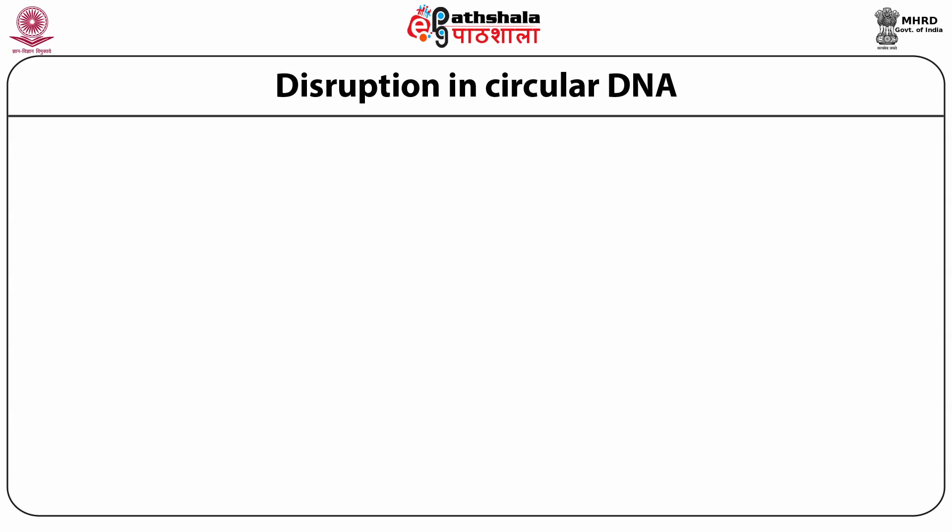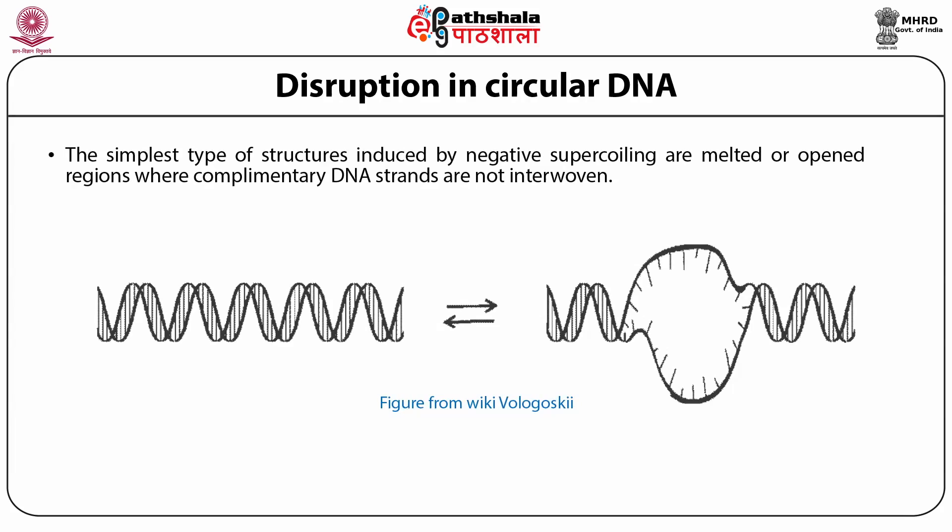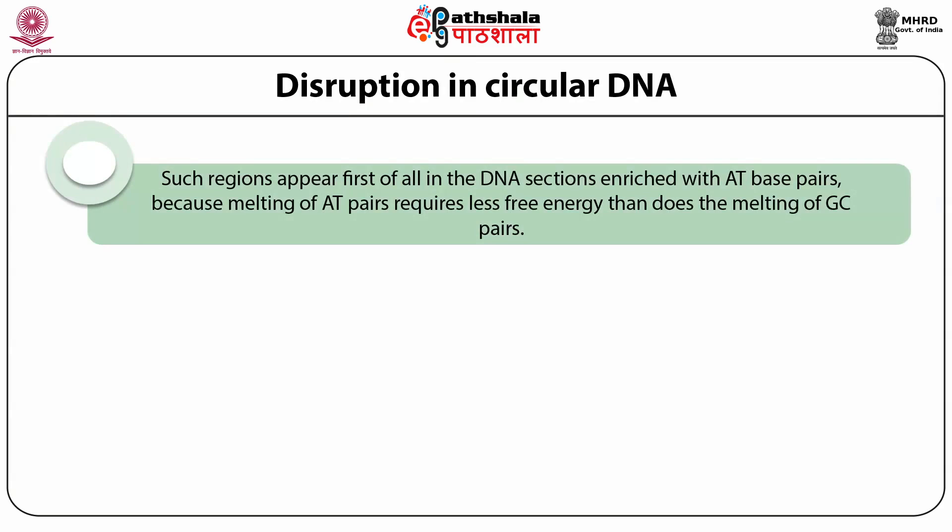Another example of disruption in circular DNA: the simplest type of structures introduced by negative supercoiling are melted or open regions where complementary DNA strands are not interwoven. A significant portion of the DNA can become melted or not interwoven, as shown in the picture. Such regions appear first of all in DNA sections enriched with AT base pairs, because melting of AT base pairs requires less free energy than melting of G-C pairs.